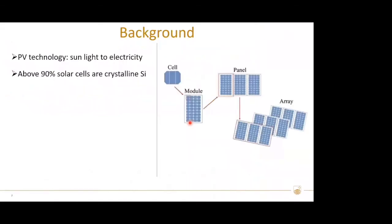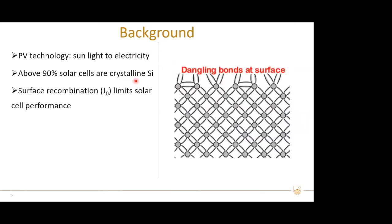Photovoltaic technology converts sunlight directly into electricity. We often see PV arrays connected by solar modules on rooftops or in solar power plants. Nowadays, above 90% of solar modules are made from crystalline silicon solar cells. The output of solar modules is determined by the conversion efficiency of solar cells, and surface recombination is one of the key factors limiting performance.